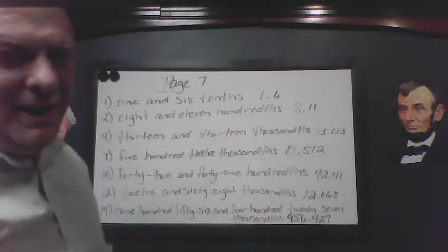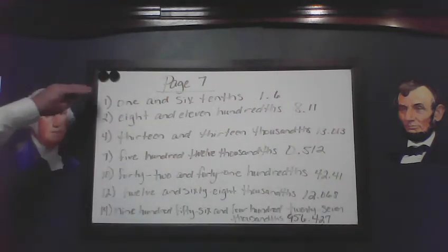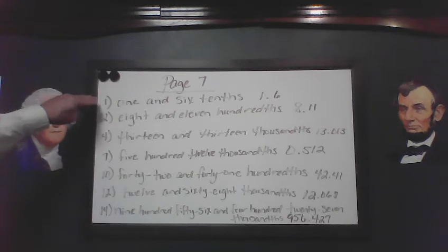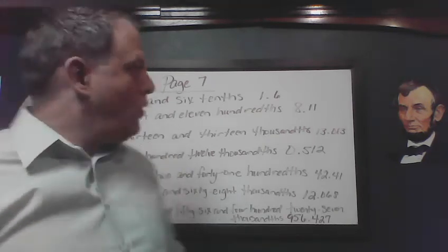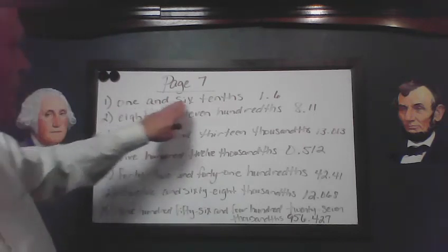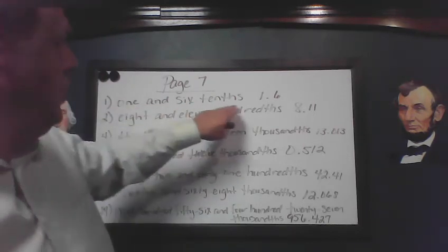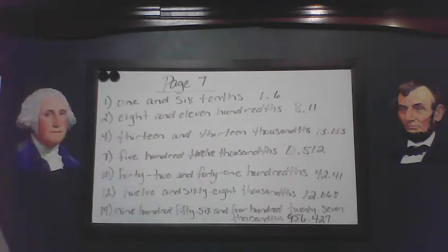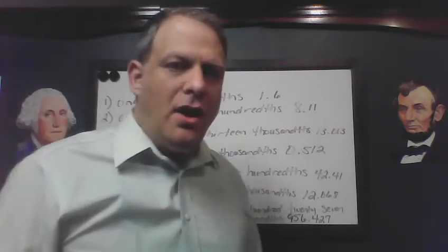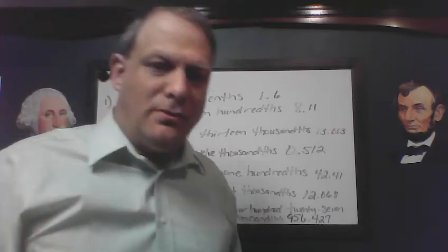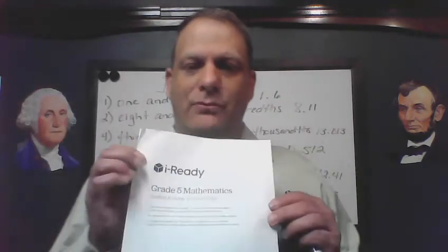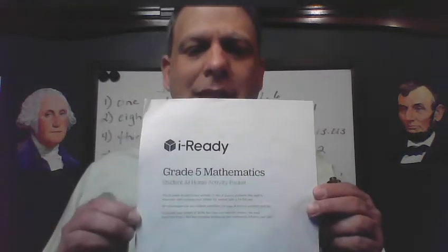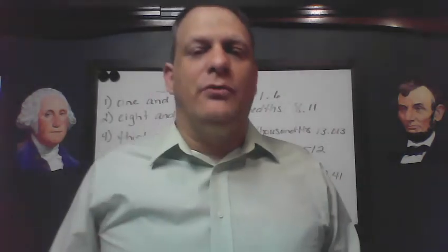So what we're going to do today is we're going to do page seven, various ones — number one, two, four, seven, ten, twelve, and fourteen. We're going to write them in reverse, going from the words to the decimal form. In other videos, we had where we wrote from decimal form to word form. Right now, we're doing the I-Ready packet, the at-home activity packet, grade five for mathematics, for those who are out for the rest of the year with the coronavirus.